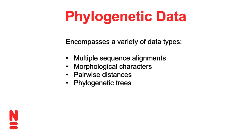Phylogenetic data encompasses a variety of different data types. For example, character data such as multiple sequence alignments and morphological characters. These data are pretty straightforward in the sense that they're basically like a great big table where every row is one of the tips in the tree, and within that row is maybe sequence data, categorical characters, or perhaps continuous characters. Slightly more complicated is pairwise distance data — a triangular table showing how distant all the tips in the tree are from one another, for example in sequence substitutional space.